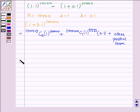Now this is equal to the first term is 1 because 10,000C0 is 1 and 1 to the power 10,000 is 1 plus the second term is 10,000C1 is 10,000. 10,000 into 0.1 plus other positive terms.